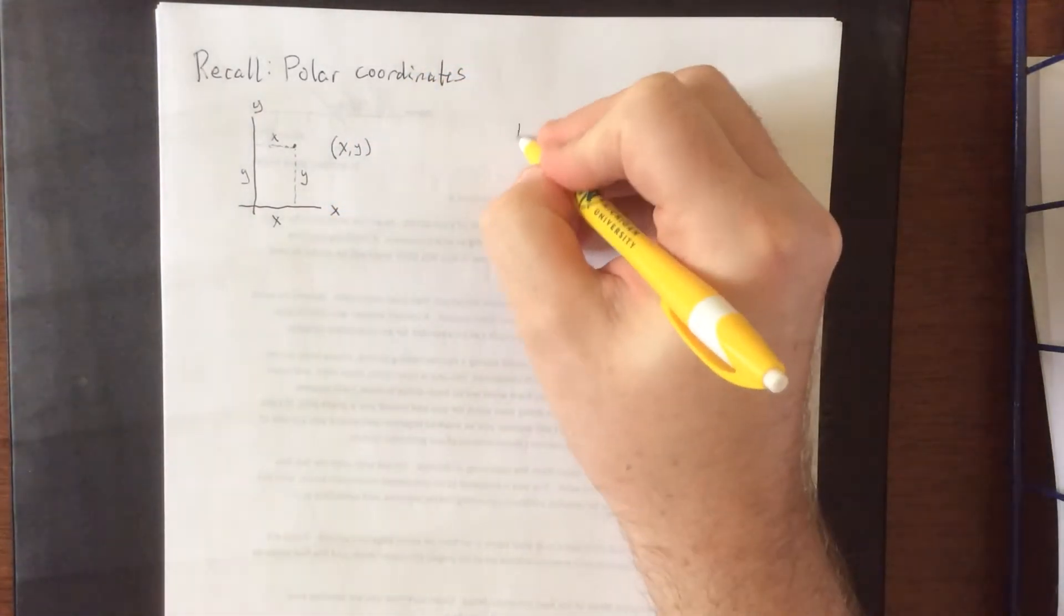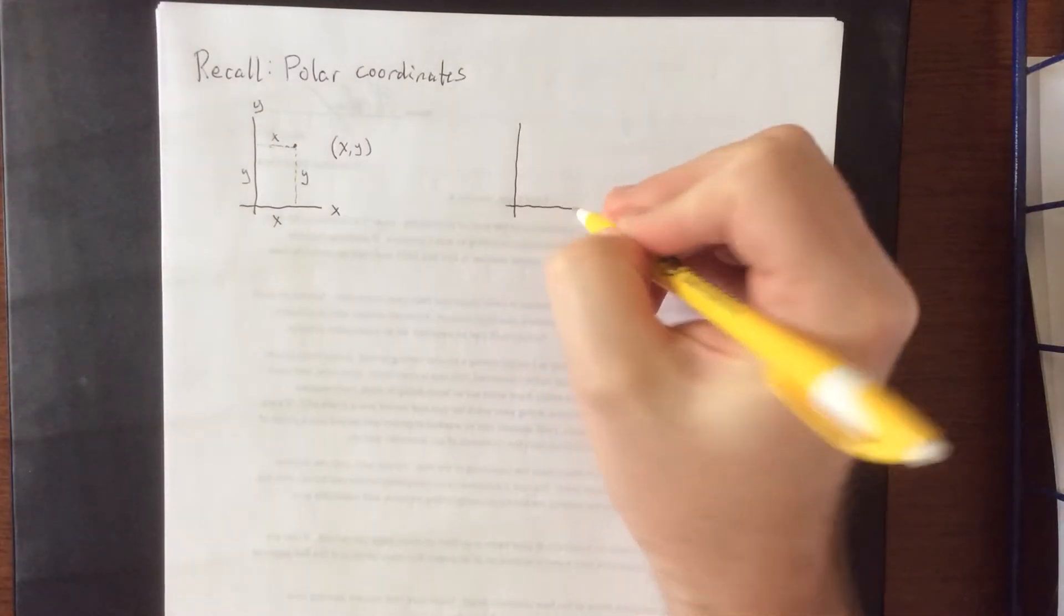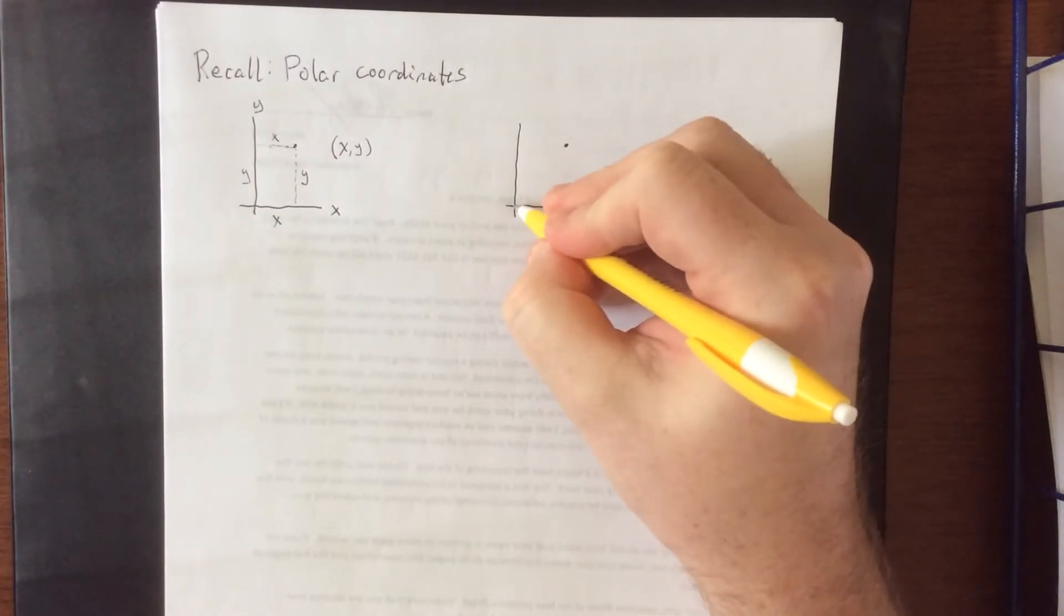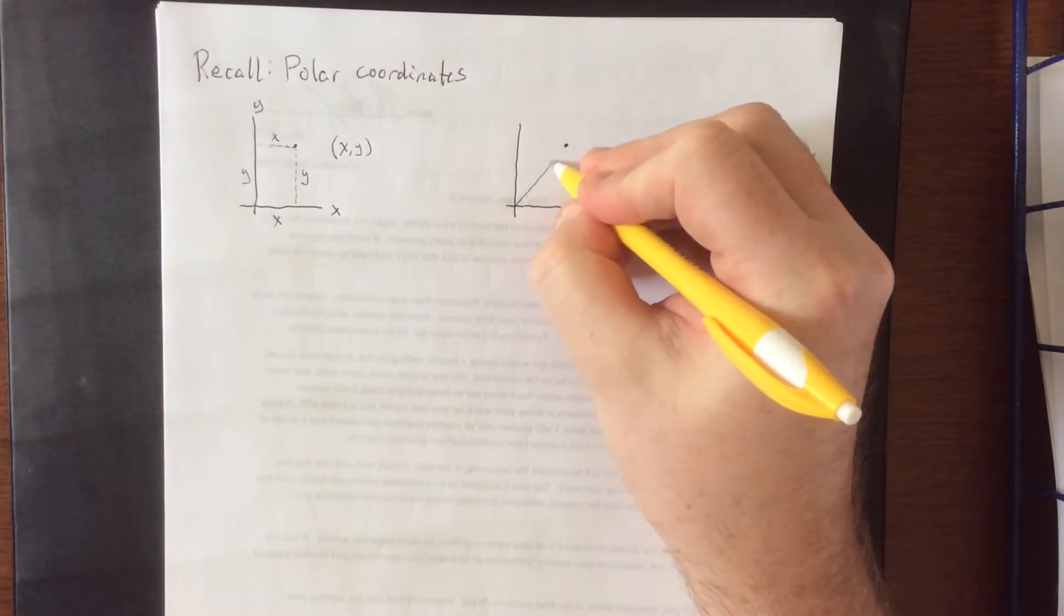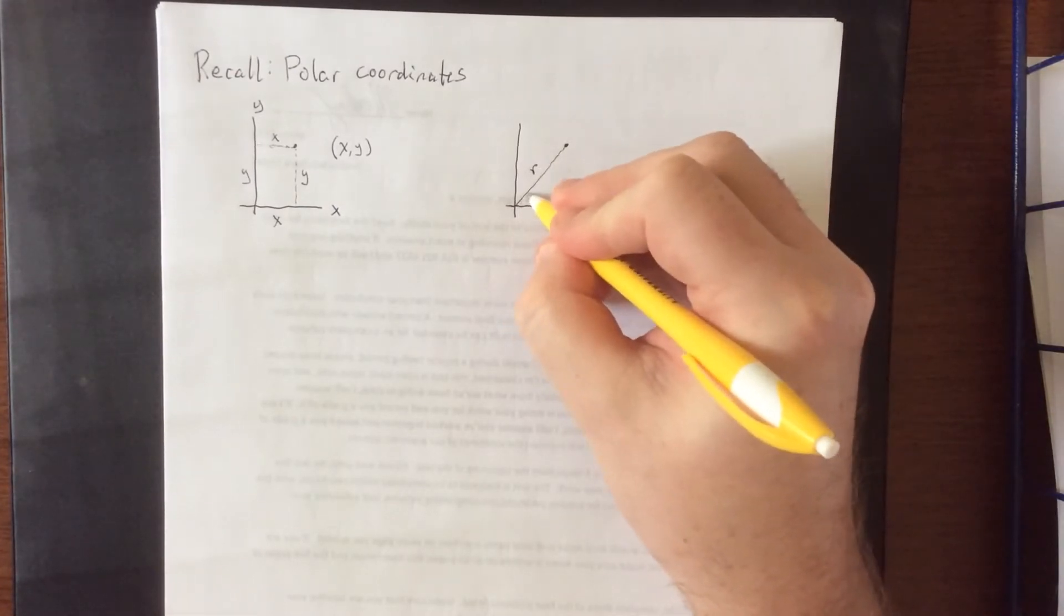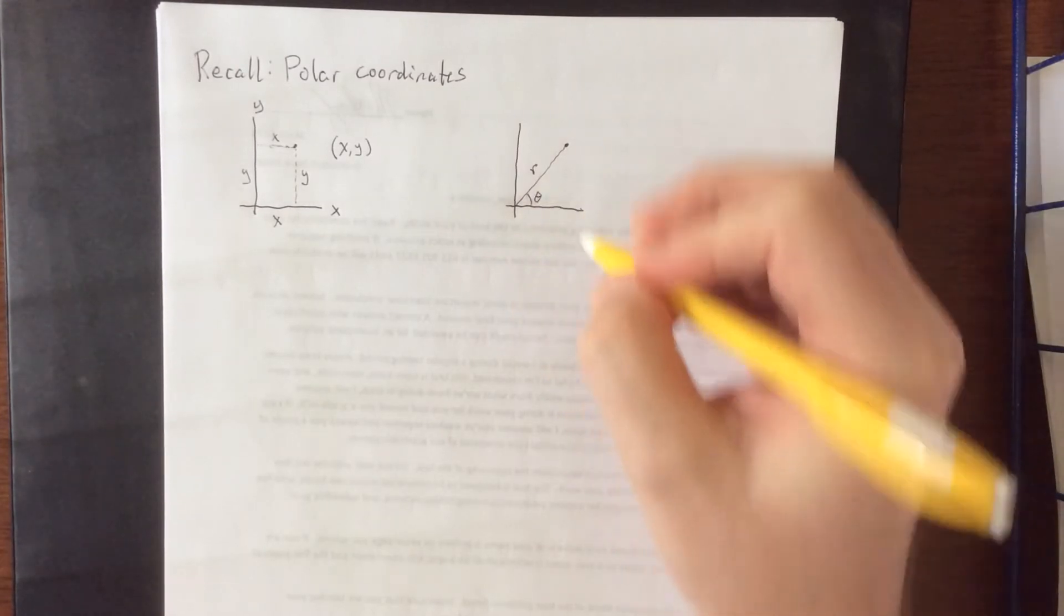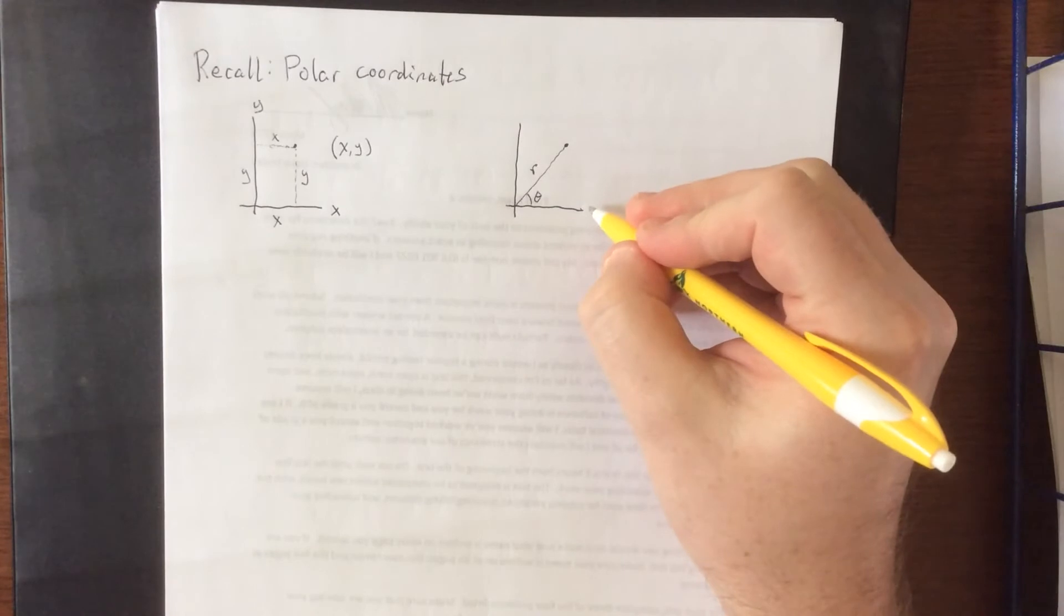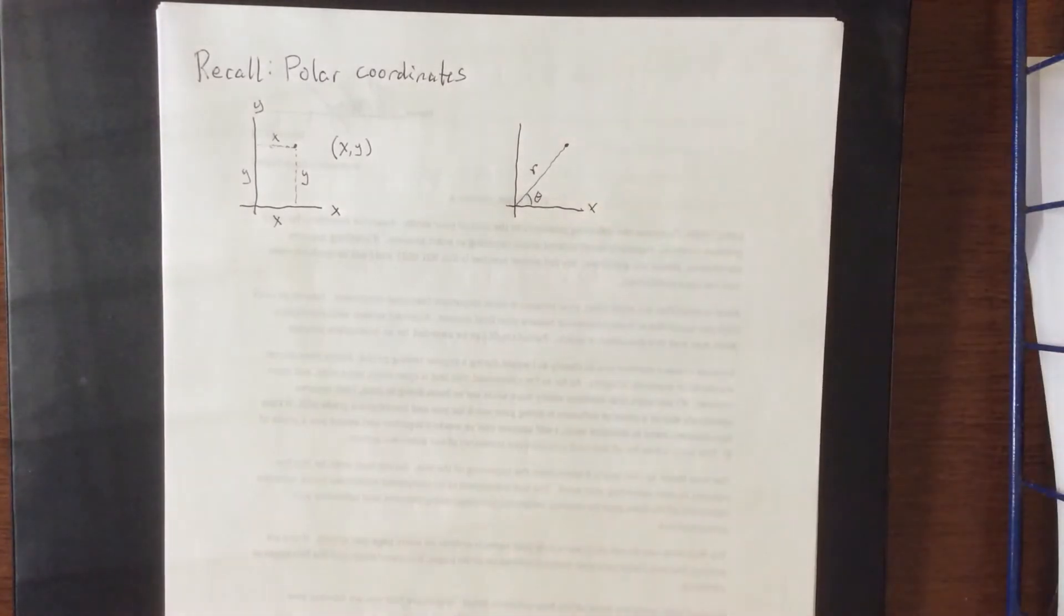Whereas in the polar coordinate system, rather than referring to it as an origin, we refer to it as a pole. The distance from the pole out to a certain point was referred to as r, and the associated angle created at the pole with the polar axis, or horizontal axis, would be the angle theta.